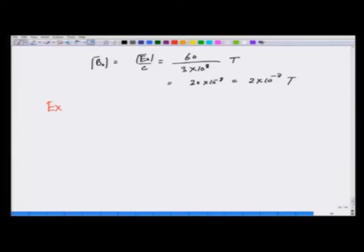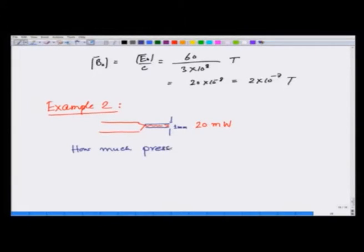As example 2, I am going to talk about a laser pointer which is giving out laser light. Let us say this typical laser pointer that we see in the lab and in the auditorium is of power 20 milliwatts. So 20 milliwatts of power is coming out, and since laser light goes as a beam, let us say the radius of this beam is 1 millimeter. Therefore, what we want to know is how much pressure does this laser apply on a surface where it is completely absorbed.